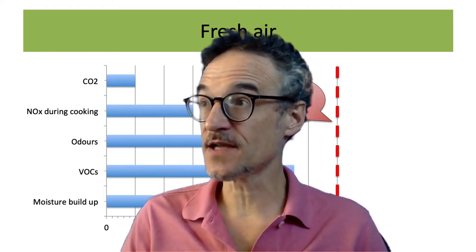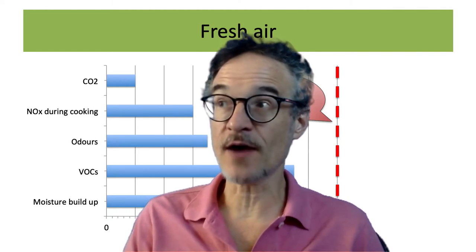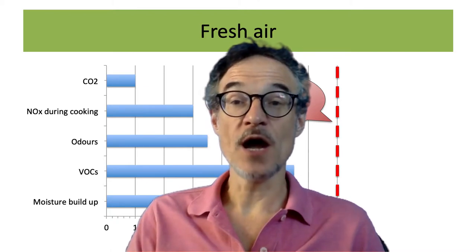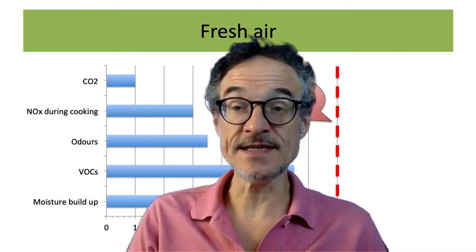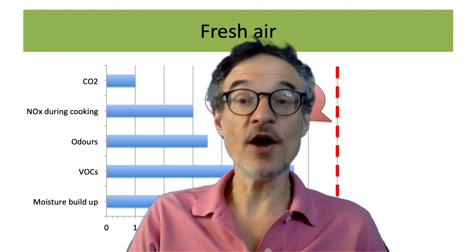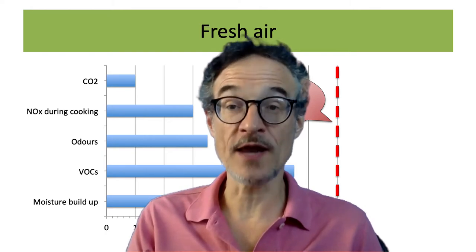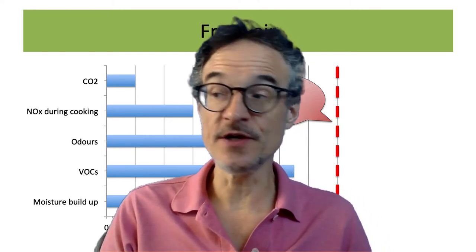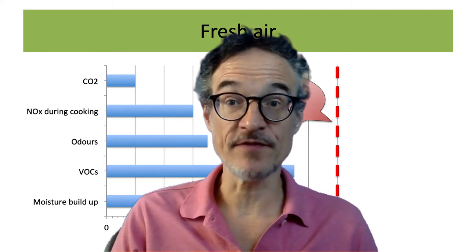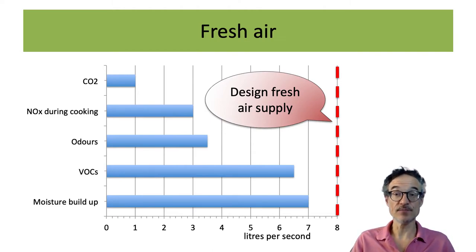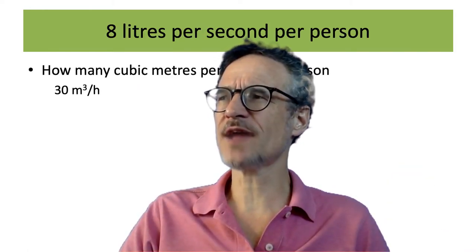Another thing not on this list — that you may be thinking about — is viruses and diseases. We do need ventilation for viruses and diseases, and this is very important in hospitals where we know people are sick. In a hospital you need more than this level of ventilation. For your home, the recommended design ventilation is eight litres per second per person.